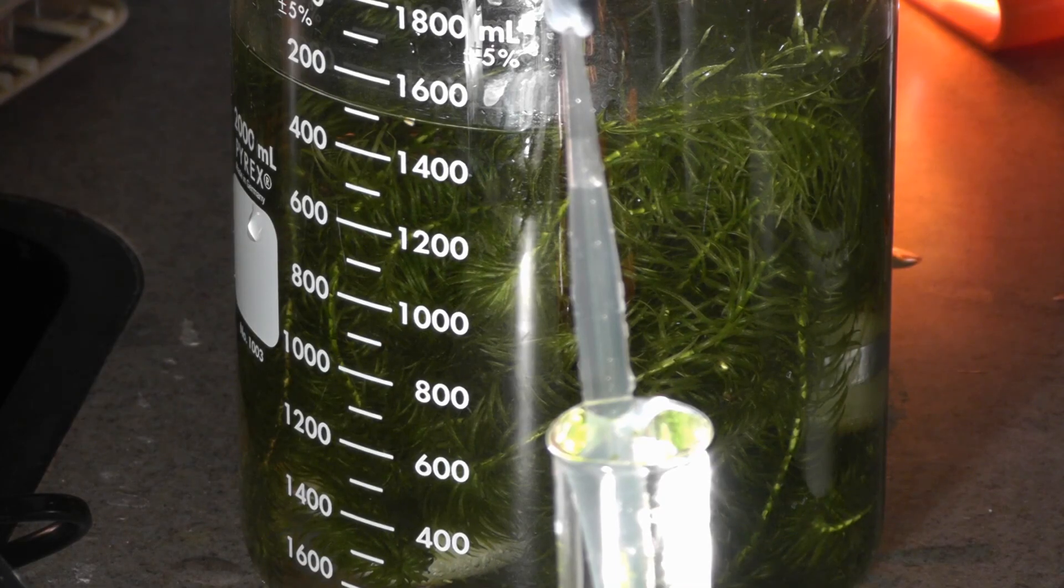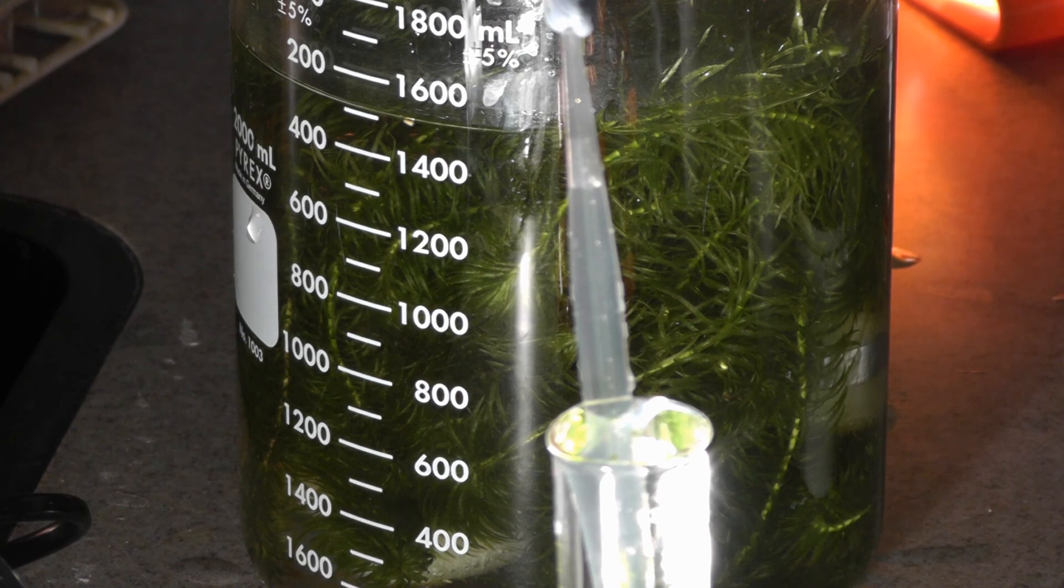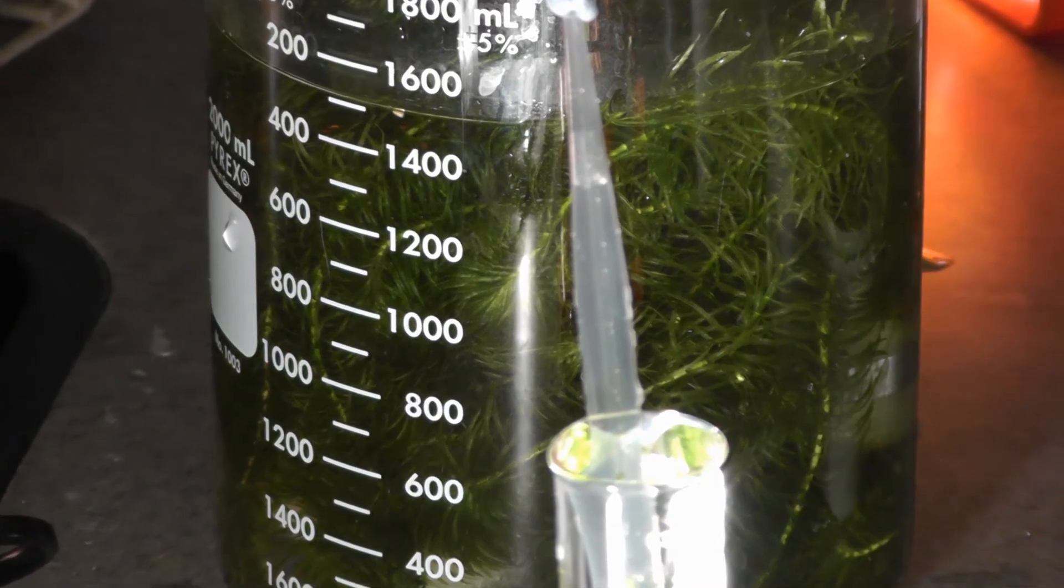Egeria najas is commonly used as an aquarium oxygenator and can be purchased from most aquarium suppliers. Remember that like Cabomba, Egeria najas is non-native to the UK so please dispose of it carefully via your normal refuse to ensure that it doesn't enter waterways.